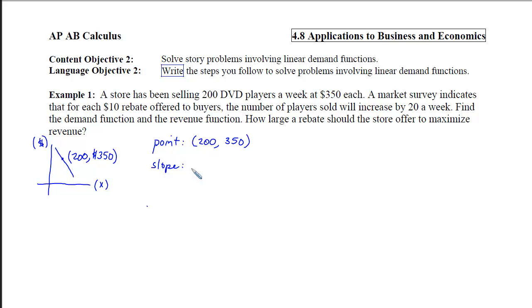Well, slope is typically a derivative, but we do not have a function to take the derivative of. We do, however, have another point on this that is buried in the words. This says a market survey indicates that for each $10 rebate, meaning that this price will go down to 340, then I'm going to increase the number of players that are sold by 20. So I would get a 220 as my X coordinate. So if I compute the slope by doing Y minus Y over X minus X, I will end up with a negative 10 over 20 or a negative 1 half.